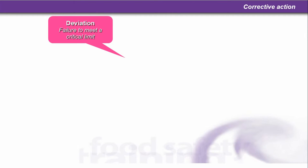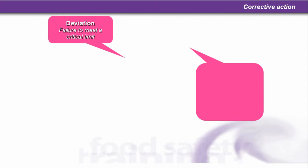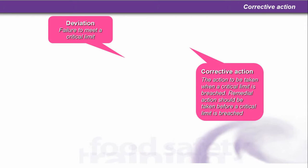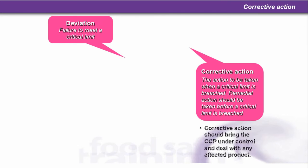Corrective action. Deviation is a failure to meet a critical limit. Corrective action is the action to be taken when a critical limit is breached. Remedial action should be taken before a critical limit is breached. Corrective action should bring the CCP under control and deal with any affected product.